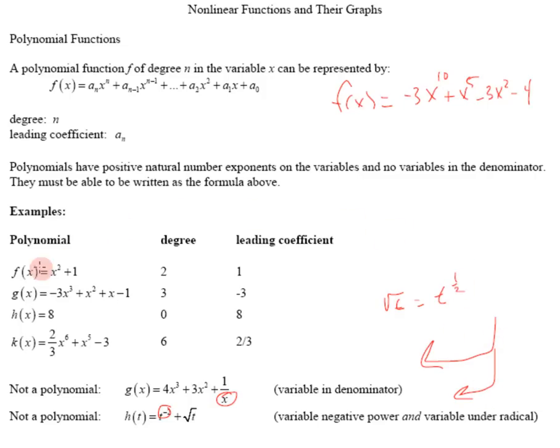Here are some examples of polynomials and their degree and leading coefficients. Here we have a second degree with a leading coefficient of 1. Third degree with a leading coefficient of negative 3.